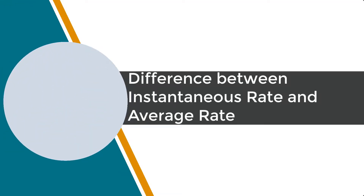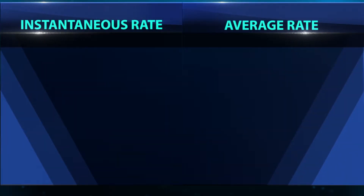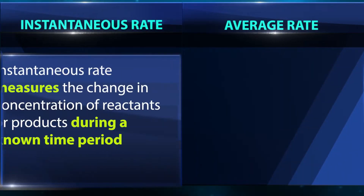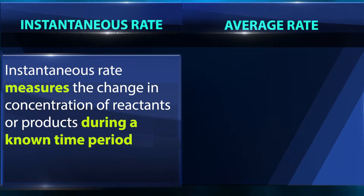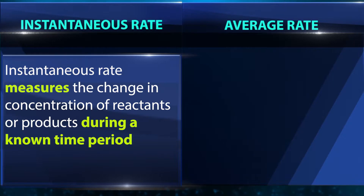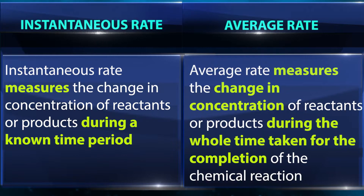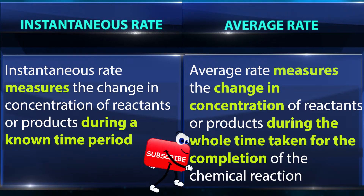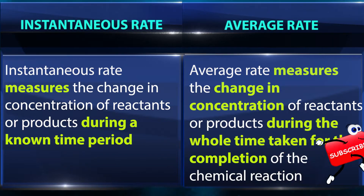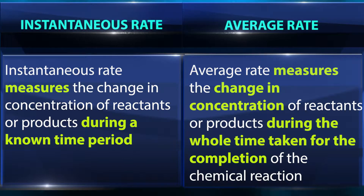Difference between Instantaneous Rate and Average Rate. Instantaneous Rate measures the change in concentration of reactants or products during a known time period. Average Rate measures the change in concentration of reactants or products during the whole time taken for the completion of the chemical reaction.